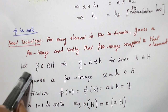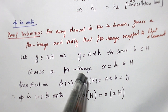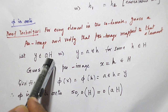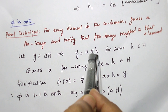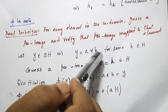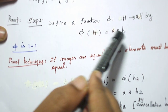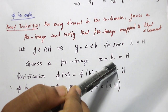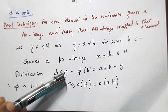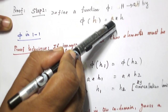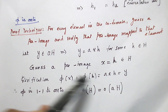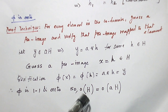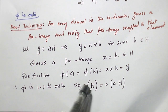For onto: for every element in the codomain, let us find a pre-image. I take an arbitrary element Y in AH; it takes the form A★H. I guess the pre-image as H. From the mapping, φ(H) = A★H = Y. So X = H is the pre-image mapped to Y. Therefore φ is onto. Thus H and AH have the same number of elements — any left coset has the same cardinality as H.